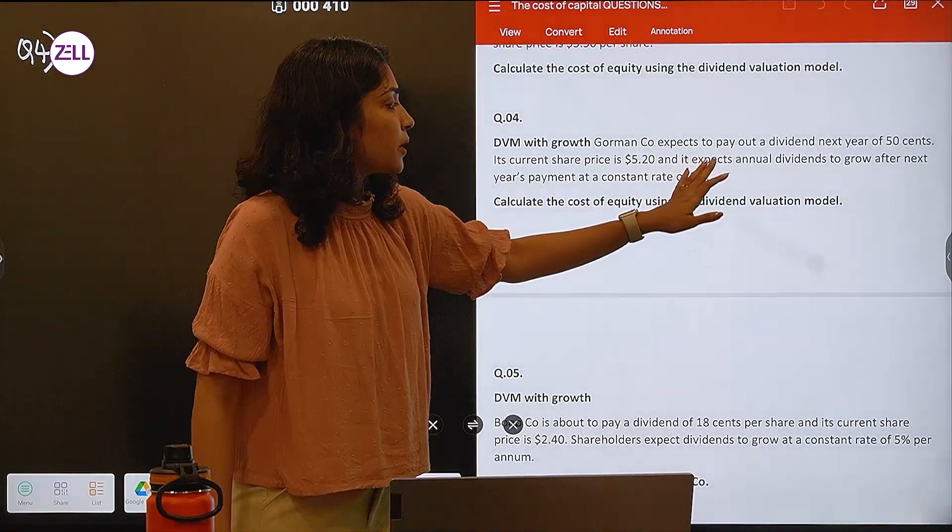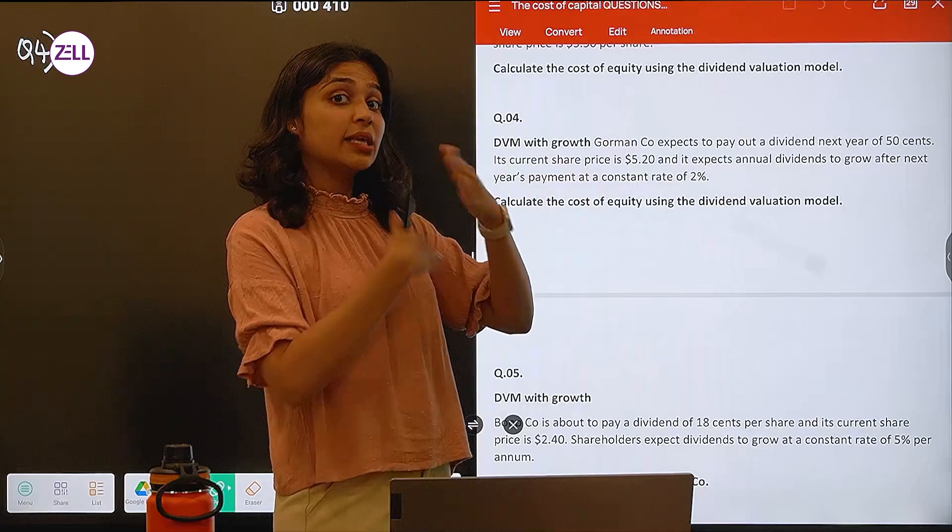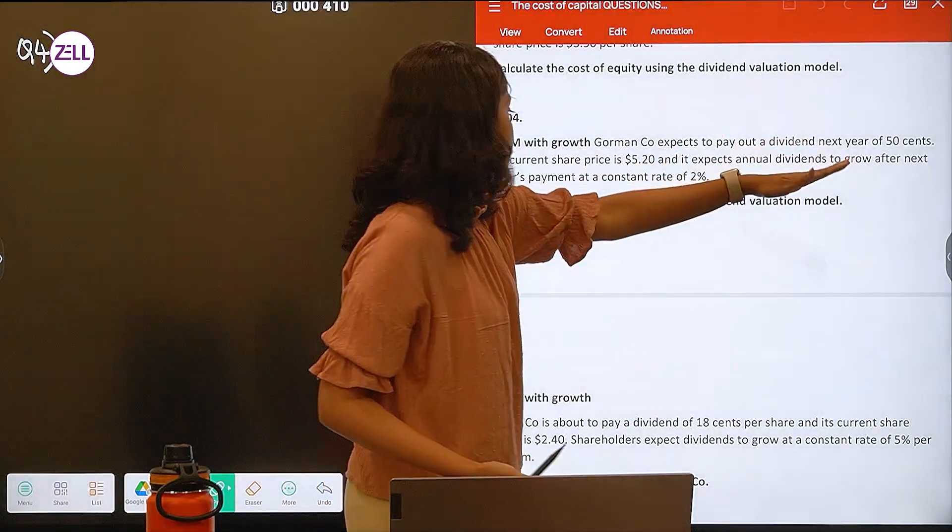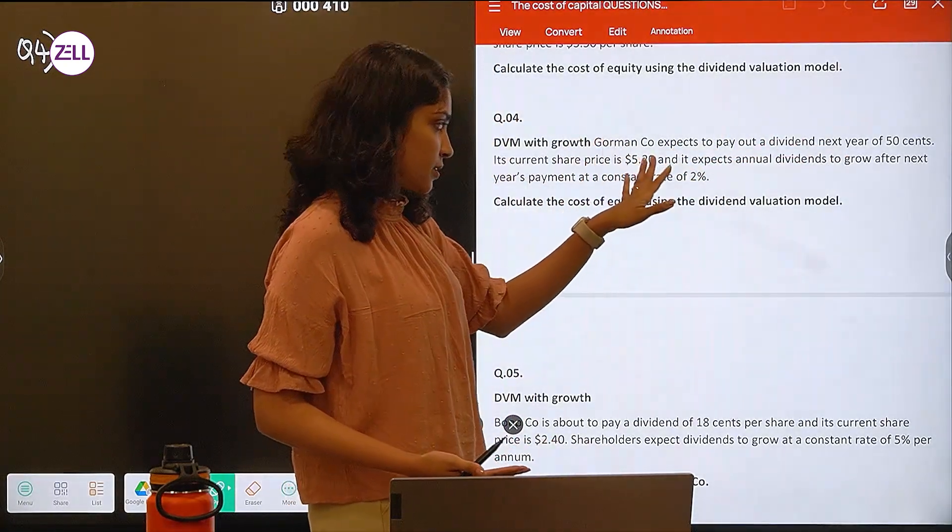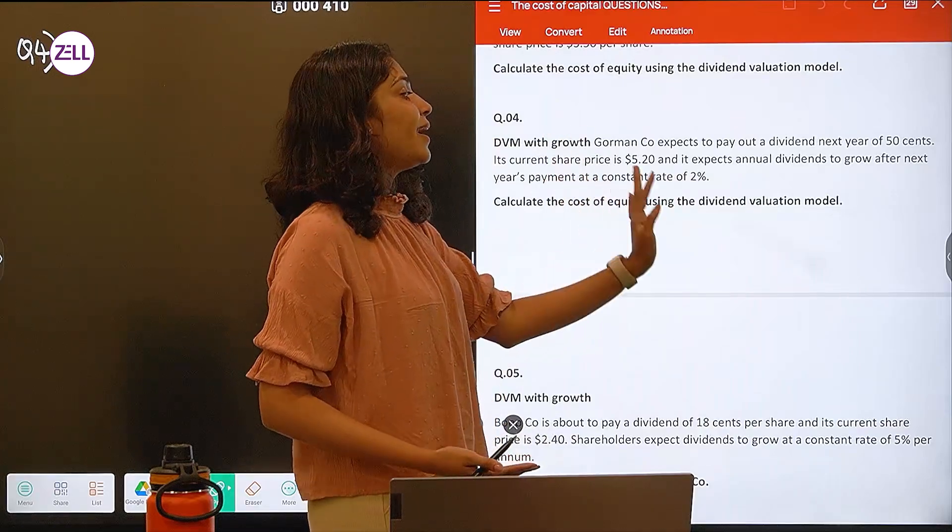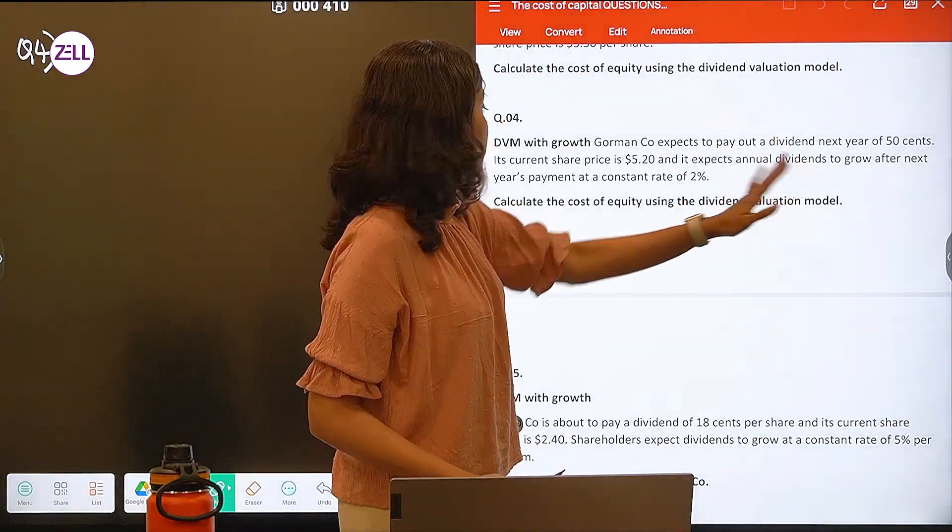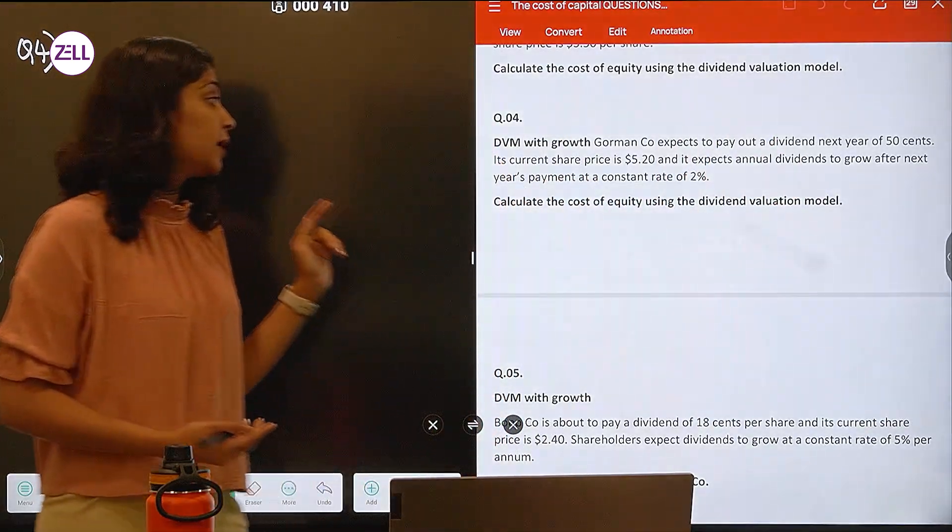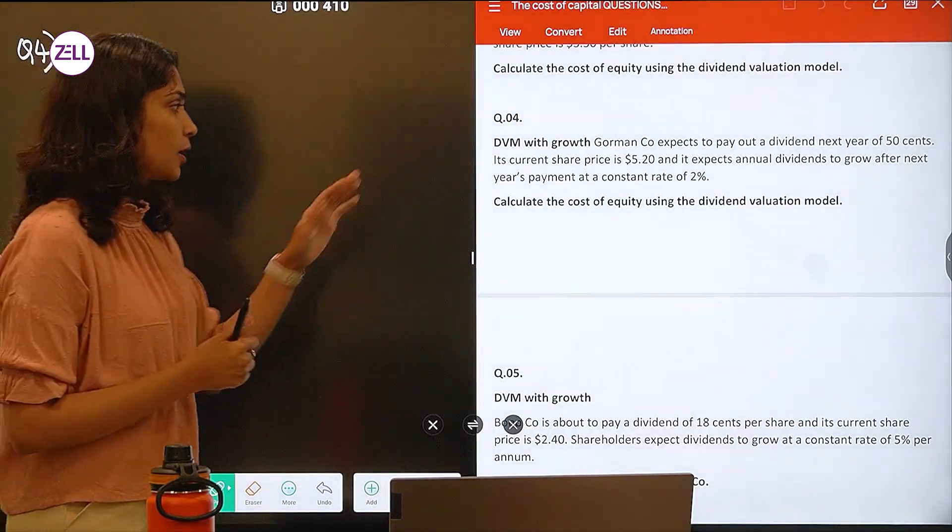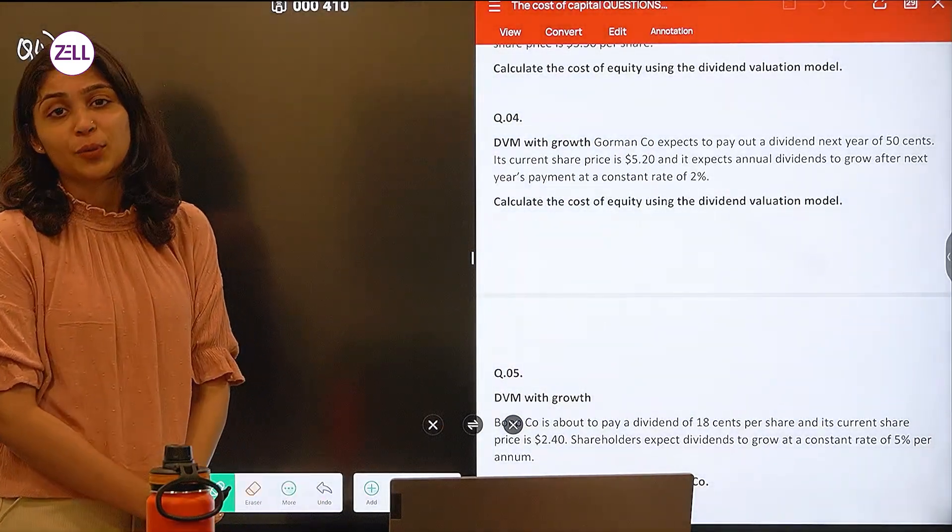Gorman company expects to pay out dividends next year of 50 cents and its current share price is 5.2 dollars and it expects its annual dividends to grow at the rate of 2%. Calculate the cost of equity.